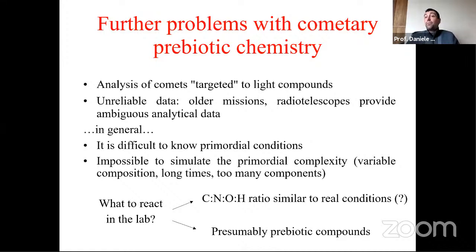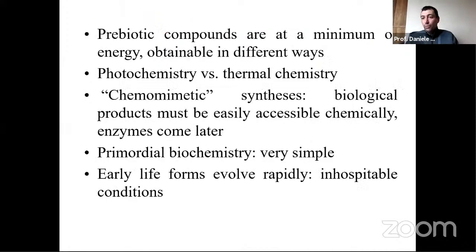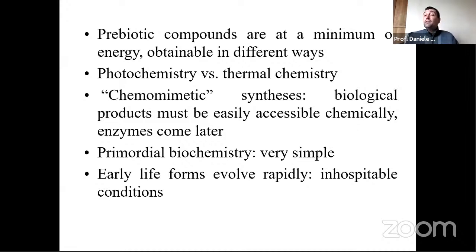We infer what that ratio was and simulate the prebiotic mixture using this approach. We can also use prebiotic compounds, choosing molecules that were reasonably present in the prebiotic atmosphere. We can't use a direct RNA molecule, but we can use sugars, phosphonic acid, or similar compounds. We must choose carefully to obtain results that have something to do with the real world as it was billions of years ago.